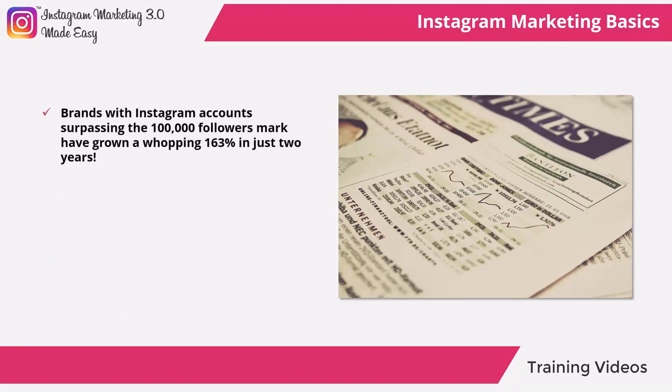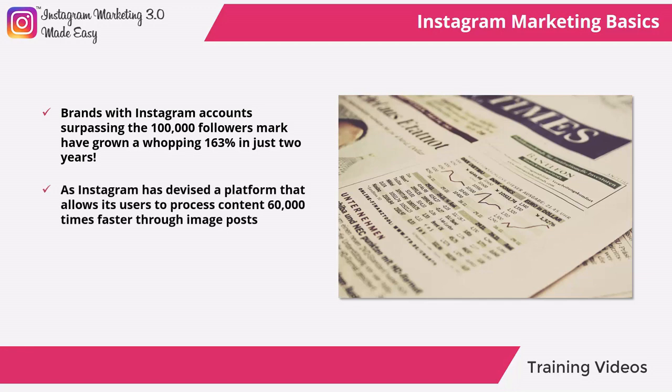Brands with Instagram accounts surpassing the 100,000 followers mark have grown a whopping 163% in just two years. The secret behind why marketing on Instagram is so successful can be explained with science — Instagram allows its users to process content 60,000 times faster through image posts than simple text ads, with people remembering 80% of your marketing message in your Instagram promoted posts.